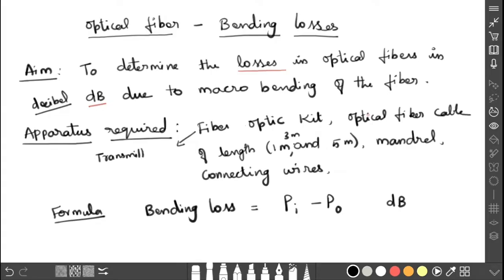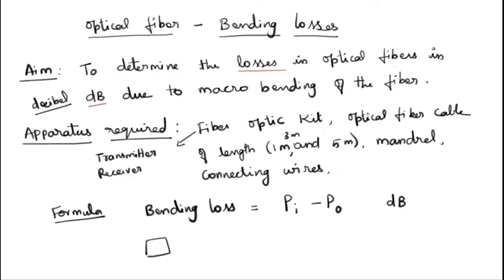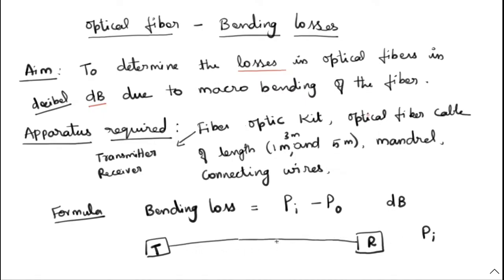In the setup, one end has the transmitter (T) and the other end has the receiver (R), and we connect the optical fiber between them. Without bending, the power reading is considered as Pi — power input. Without bending, light is passing inside the optical fiber from transmitter to receiver, and we record that first value as the input power.